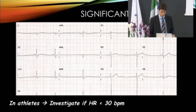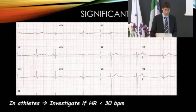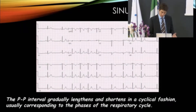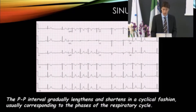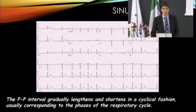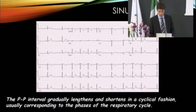However, sometimes we have very profound bradycardia with less than 30 beats per minute, and in this case we investigate further. Sinus arrhythmia — a PP interval that gradually lengthens and shortens in a cyclical fashion corresponding to the phases of the respiratory cycle — is also an absolutely normal finding, nothing to be worried about.